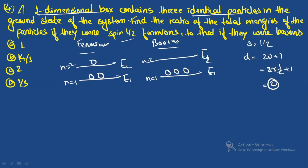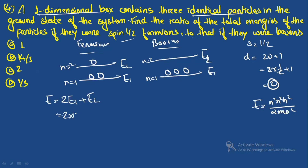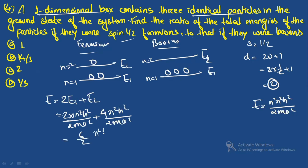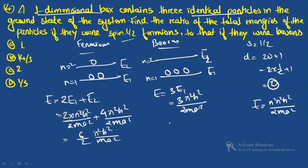For a 1D box, E_n = n²π²ℏ²/(2mа²). For fermions: E_total = 2E_1 + E_2 = 2·(π²ℏ²/2mа²) + 4·(π²ℏ²/2mа²) = 6π²ℏ²/(2mа²). For bosons: E_total = 3E_1 = 3·(π²ℏ²/2mа²).